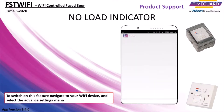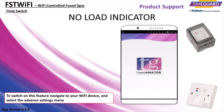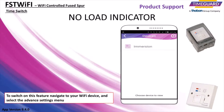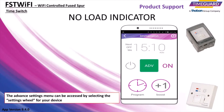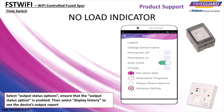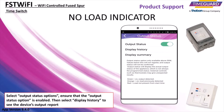To switch on this feature, navigate to your Wi-Fi device and select the Advanced Settings menu. The Advanced Settings menu can be accessed by selecting the Settings wheel for your device. Select Output Status Options and ensure that the Output Status option is enabled. Then select Display History to see the device's Output Report.